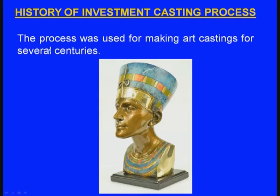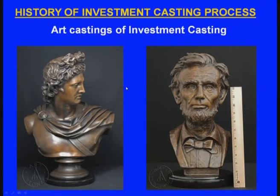We can conclude that investment casting is the most ancient process used by early man. Later this process was used for making art castings for several centuries — bronze statues of important personalities and kings were made by investment casting: a wax model of the face was created, a sand mold was compacted around it, heated so the wax drained out, then molten bronze was poured.